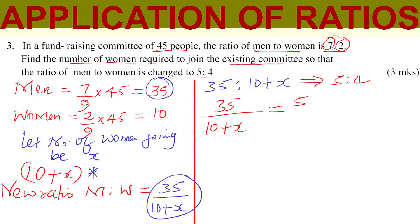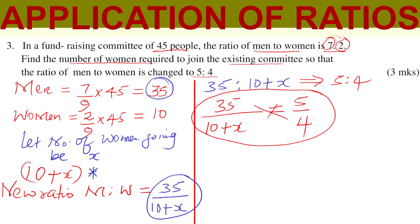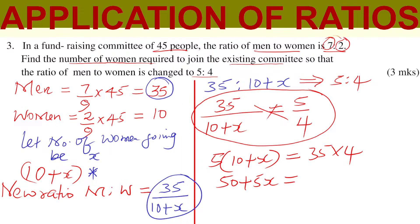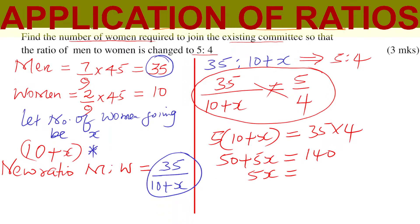With this equation, it is possible to get the value of X. We just need to cross multiply: 5 times (10 plus X) equals 35 times 4. This gives 50 plus 5X equals 140. So 5X equals 140 minus 50, which gives 90. Dividing both sides by 5, you get X equals 18.